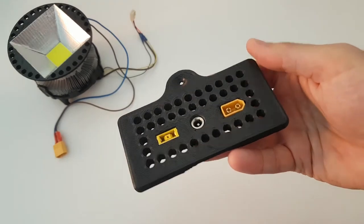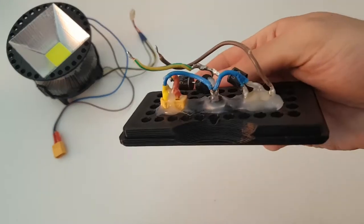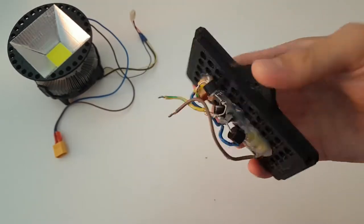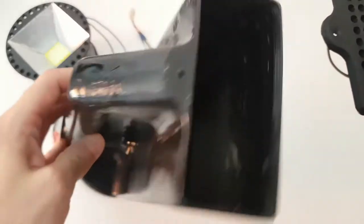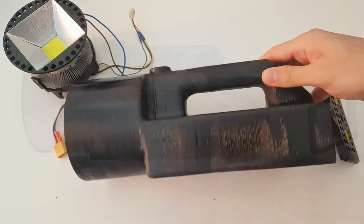This is the back of the flashlight with the charging ports, also designed by me and 3D printed. As you can see there are three connectors: an XT60, a DC jack, and a connector for Lenovo laptop chargers. So three convenient ways to charge the flashlight.